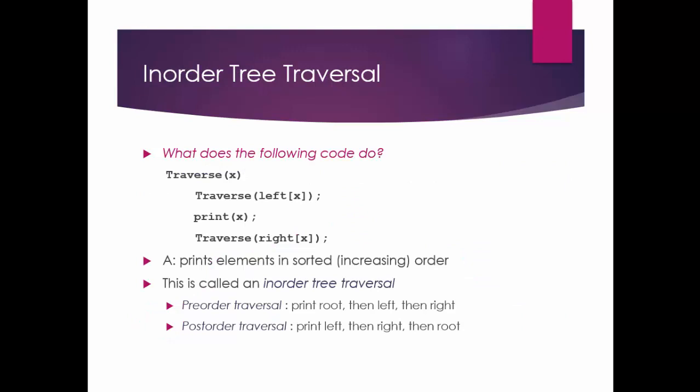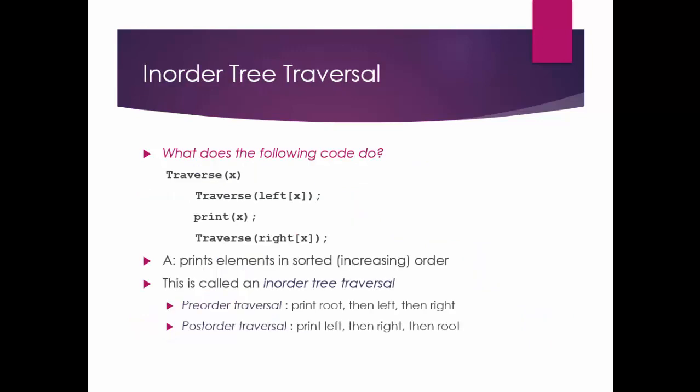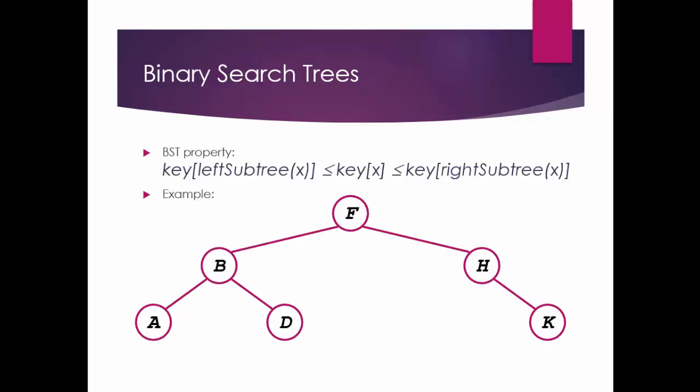Now how to traverse a tree? Let us assume that we have this tree, and traversal will be done in three ways: in-order, pre-order, and post-order. In in-order traversal, the root node is traversed last. The left node is traversed first and the right node second.